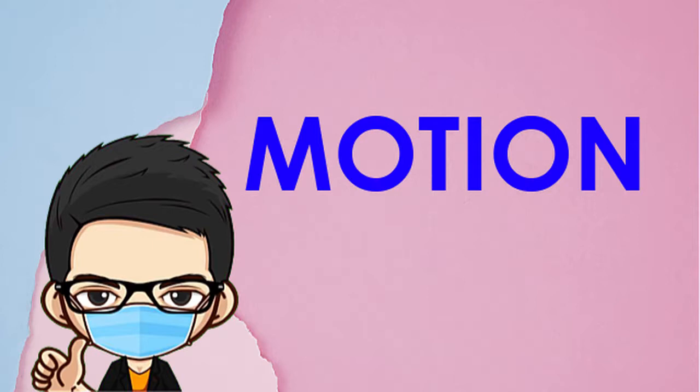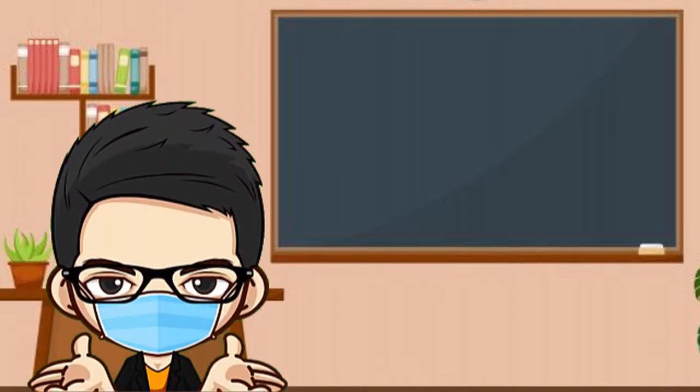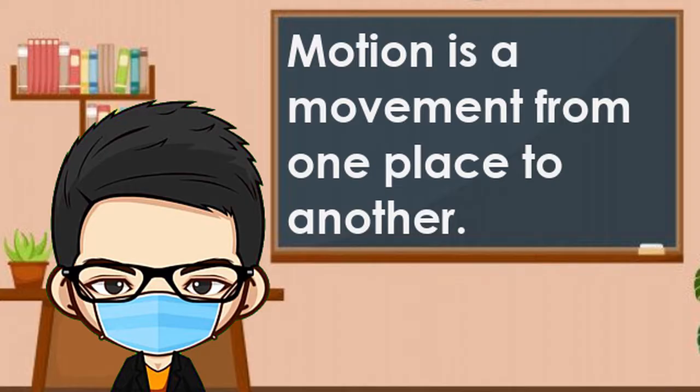Everything we've just described is types of motions. So, what is motion? Good. Motion is a movement from one place to another.